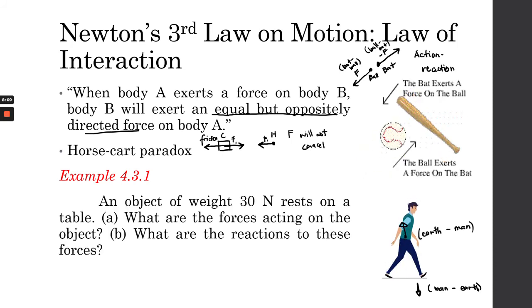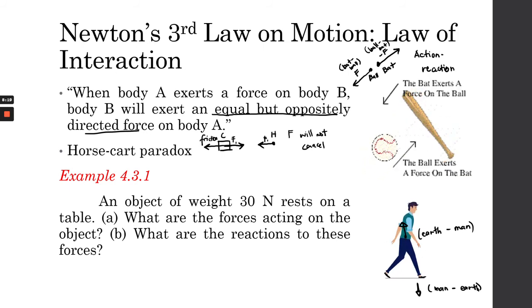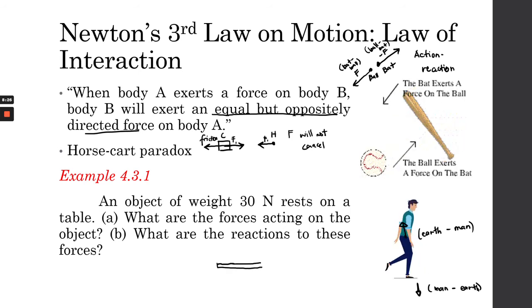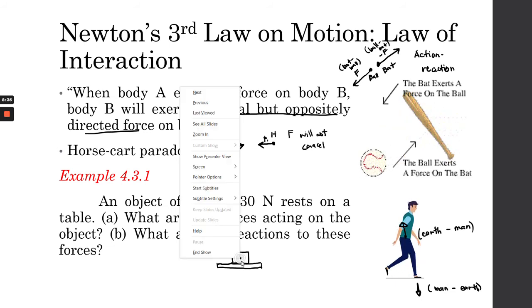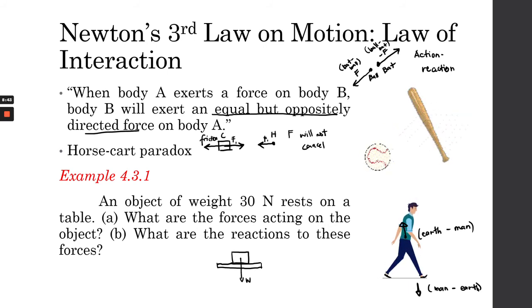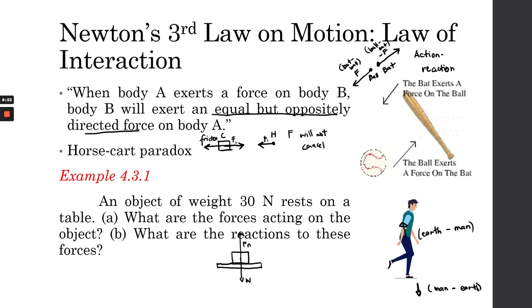For example, an object weighing 13 newtons rests on a table. What are the forces acting on this object and what are the reactions to these forces? We know that this object has a force acting on it called the weight. Since the object doesn't move up and down, there is an equal force called the normal force. This normal force is exerted by the table onto the object.